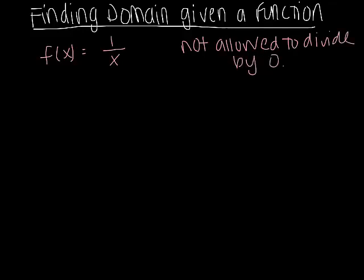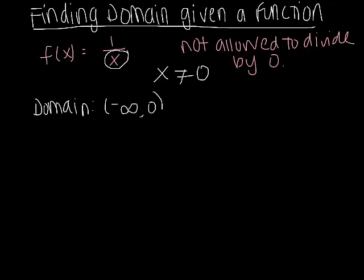You are not allowed to divide by 0. Hopefully you learned that in Algebra 1. That's undefined. You can never divide by 0. So that means that this input right here can really be anything except 0. It can be anything in the whole wide world except for the number 0. So when we write our domain, we're going to say that I can have anything from negative infinity to 0, but I'm not going to include 0. I can have anything up to the value of 0 but not 0 itself. And then I can have anything after 0.